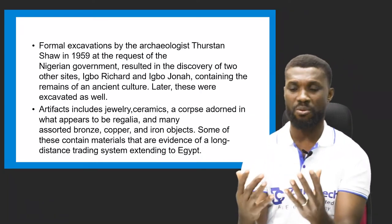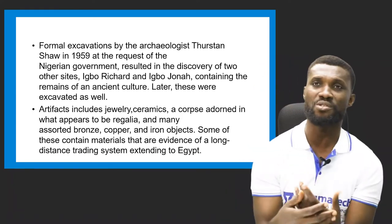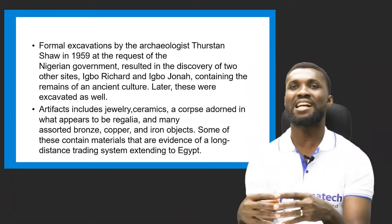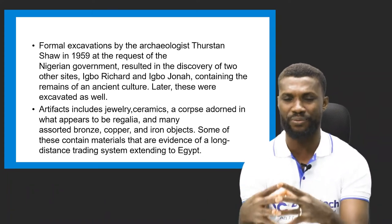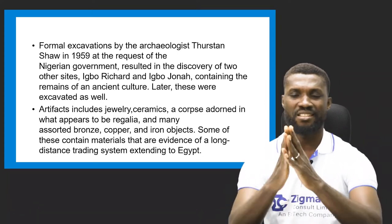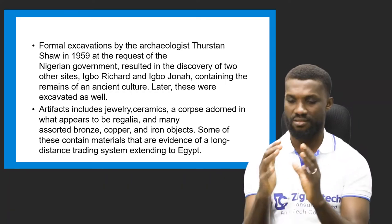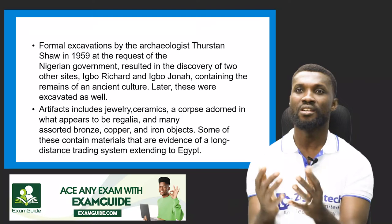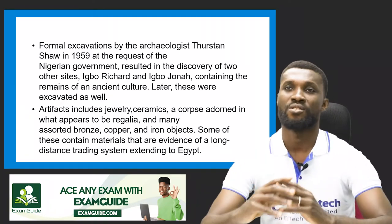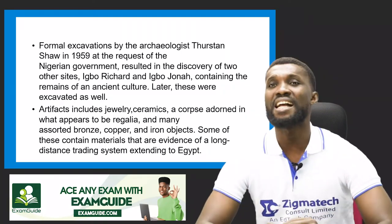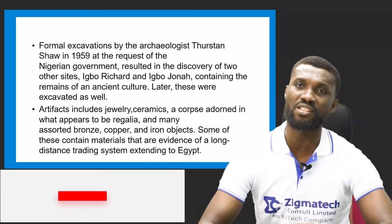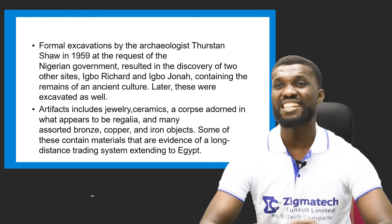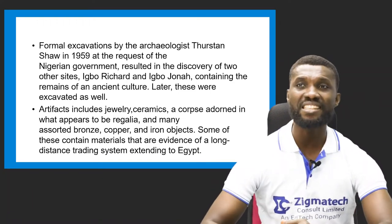The artifacts discovered include jewel rings, ceramics, and pots adorned with beautiful, intricate designs on the body — household utensils decorated with intricate patterns. Also found were many assorted bronze, copper, and iron objects, some of which contain materials that are evidence of a long-distance trading system extending toward Egypt.